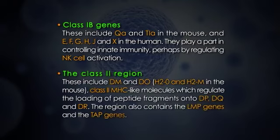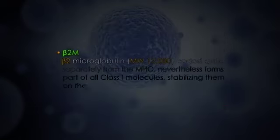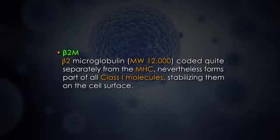The class 2 region includes DM and DO, H2-O and H2-M in the mouse — class 2 MHC-like molecules which regulate the loading of peptide fragments onto DP, DQ, and DR. The region also contains LMP genes and TAP genes. Beta-2 microglobulin, a molecule of 12,000 molecular weight coded quite separately from the MHC, nevertheless forms part of all class 1 molecules, stabilizing them on the cell surface.